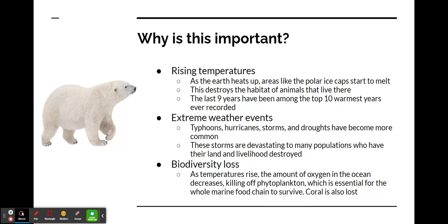Biodiversity loss: as temperatures rise, the amount of oxygen in the ocean decreases, killing off phytoplankton, which is essential for the whole marine food chain to survive as they are one of the first steps in the food chain. Coral is also killed in this process.